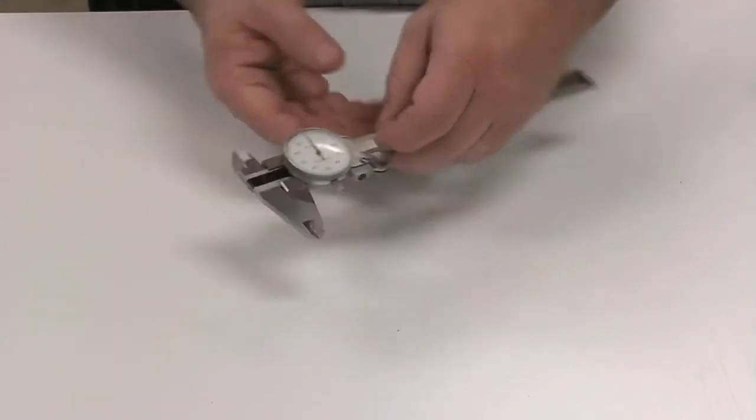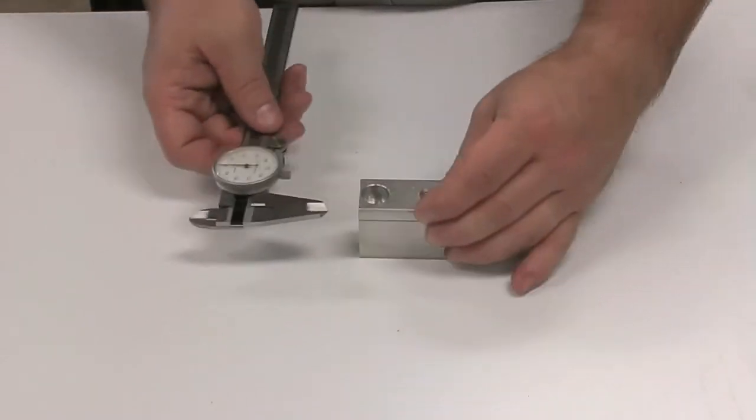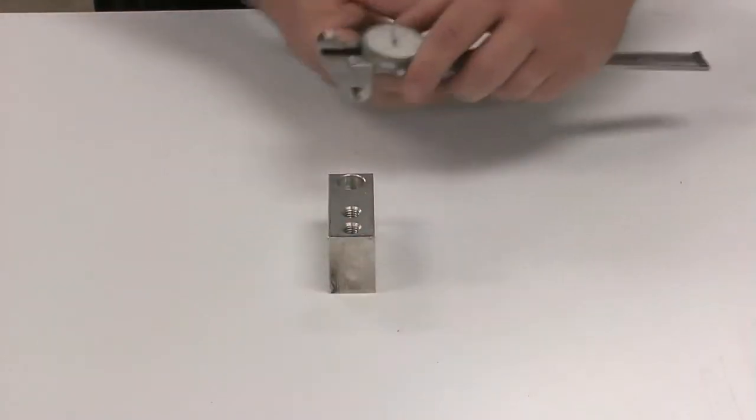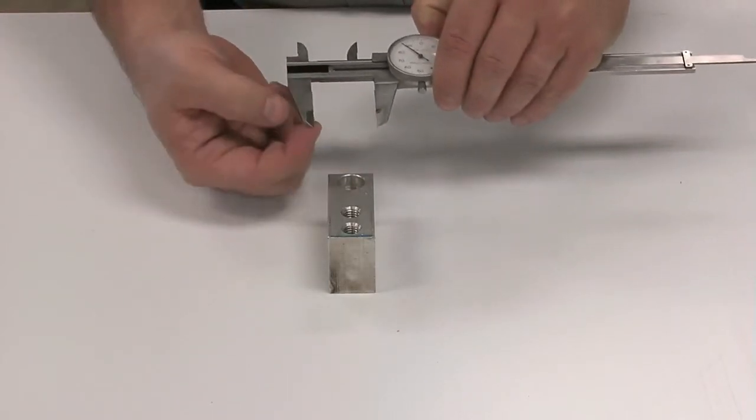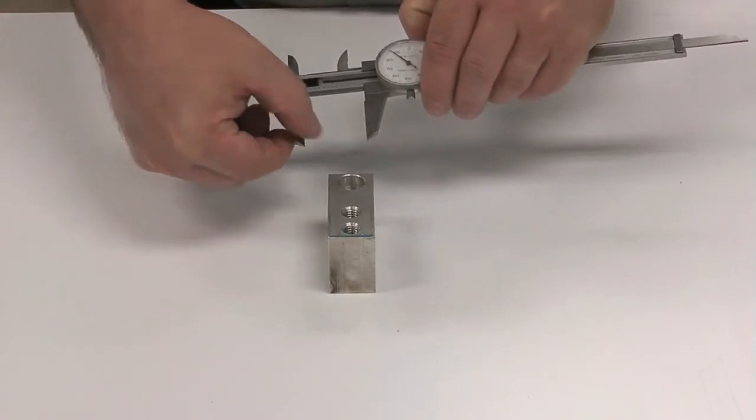These measure in a couple of ways. First, we can measure the outer surface of a piece between these two jaw nibs here. Notice how they're beveled in.